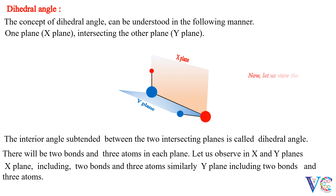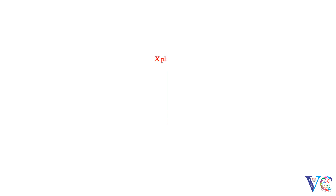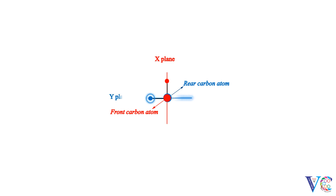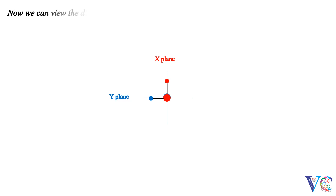Now let us view the dihedral angle in another way. In the X-plane: front carbon atom, rear carbon atom, and the atom bonded to the rear carbon atom — these three are in one plane. We can visualize the rear carbon atom, front carbon atom, and the atom bonded to the front carbon atom in the other plane. Now we can view the dihedral angle being 45 degrees and 0 degrees.